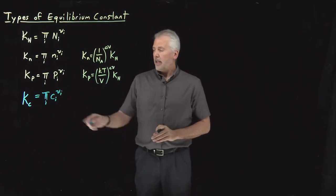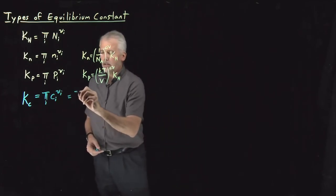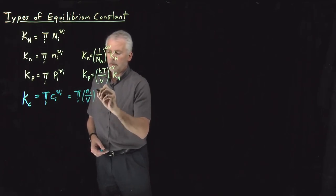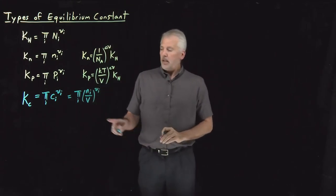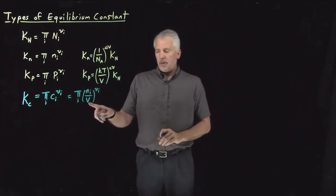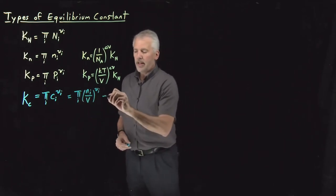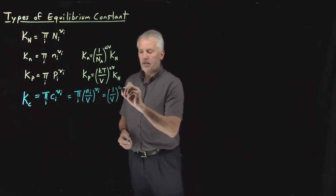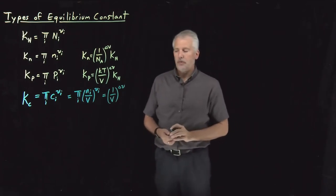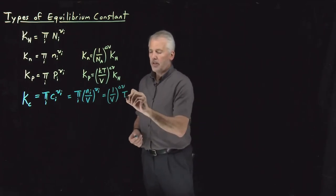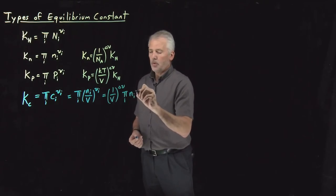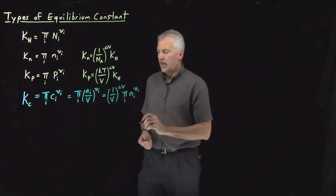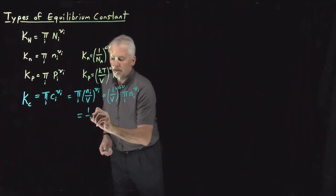If concentrations are in molarities, that's moles of each species divided by the volume of the solution. Since the volume is the same for each species, I can pull it out as 1/V raised to the sum of stoichiometric coefficients — that's Δν. What's left is a product of moles raised to stoichiometric coefficients, which is exactly Kn. So I can rewrite this as (1/V)^Δν times Kn.